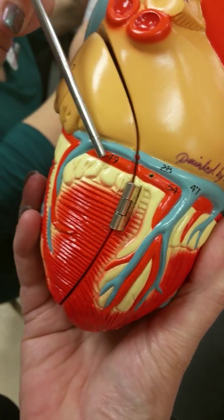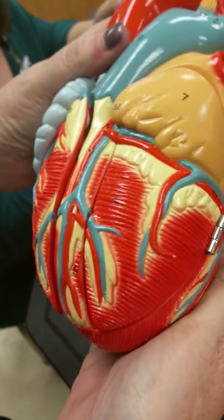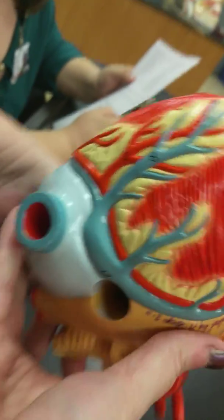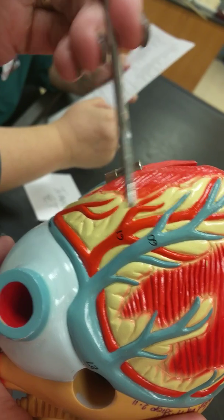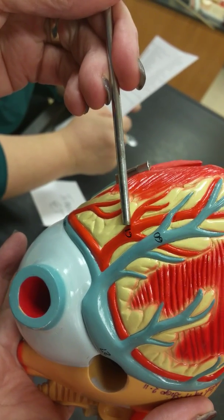60. Middle cardiac vein. 61. Posterior interventricular branch.